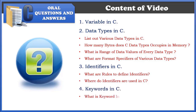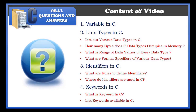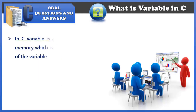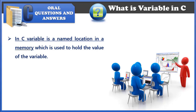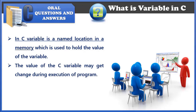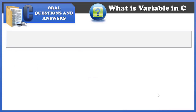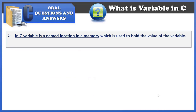Then we'll discuss about keywords and various meanings of keywords. So let's begin. A variable in C is a named memory location which is used to hold a value. The value of the variable can change during execution of the program, and the variable might belong to any of the data types like int, float, char, etc.